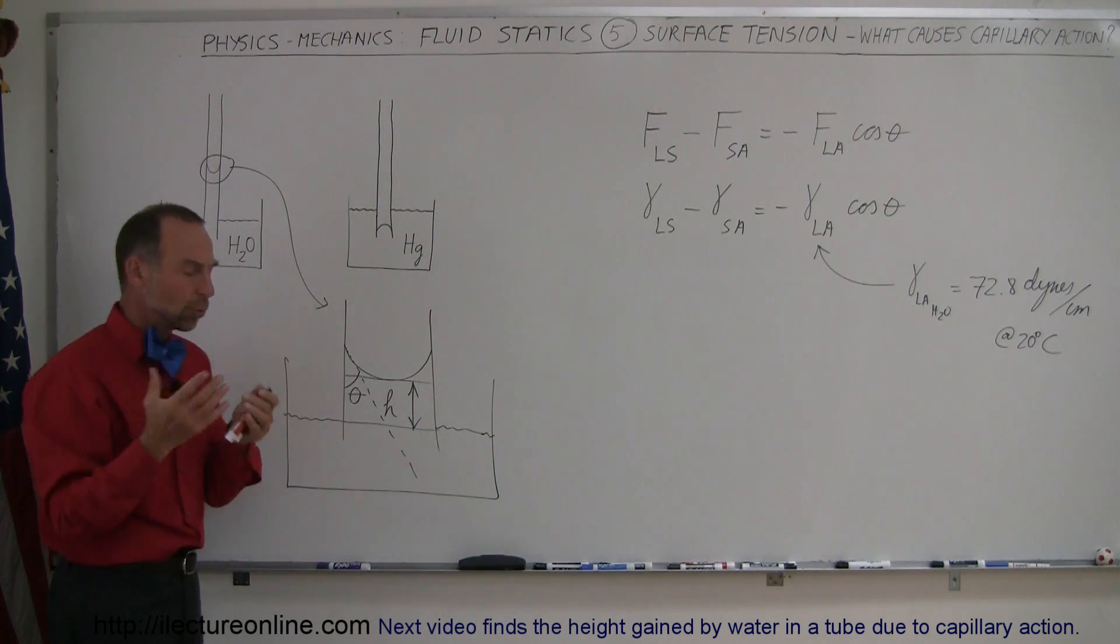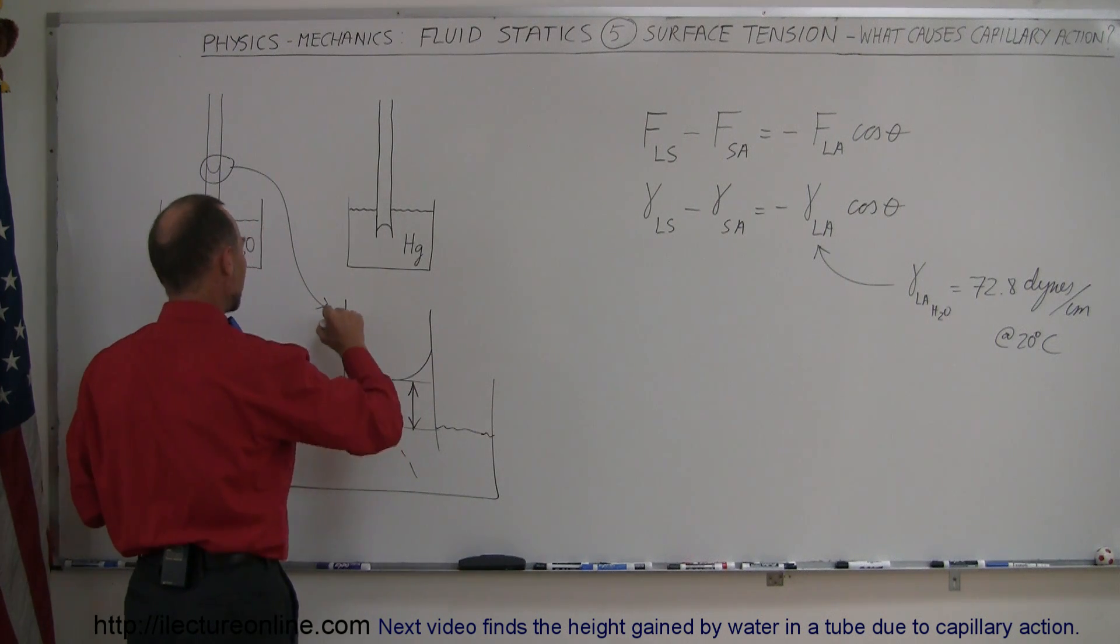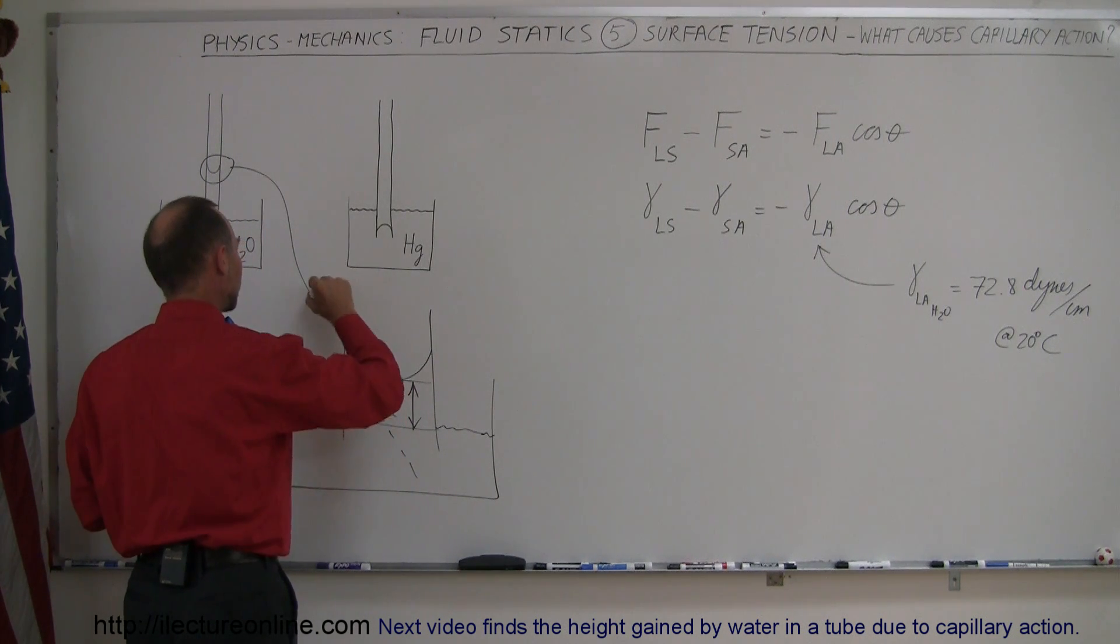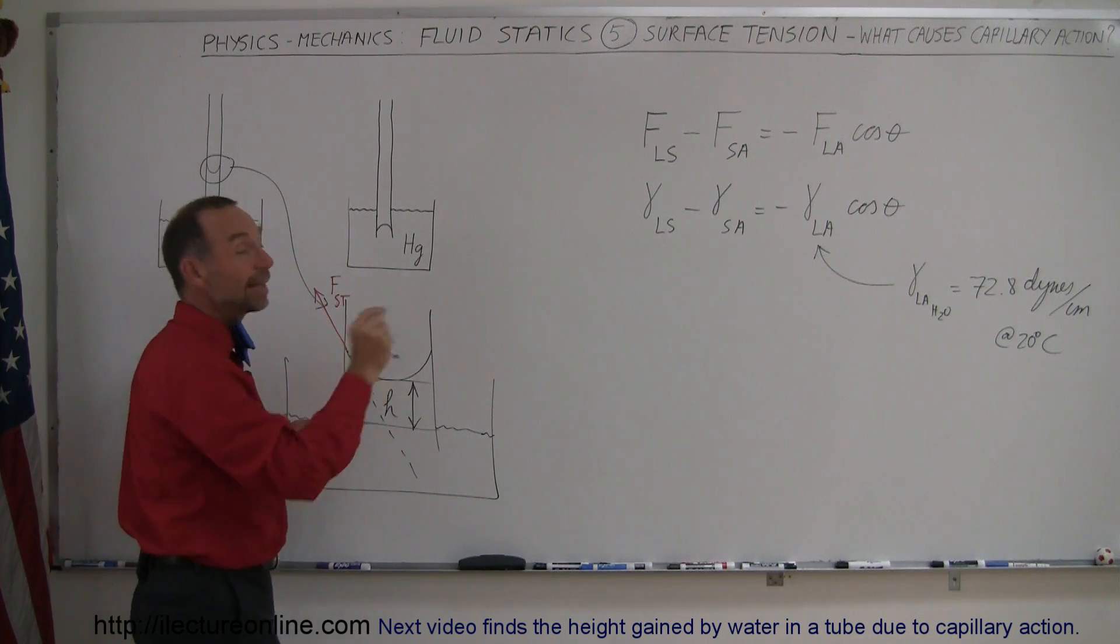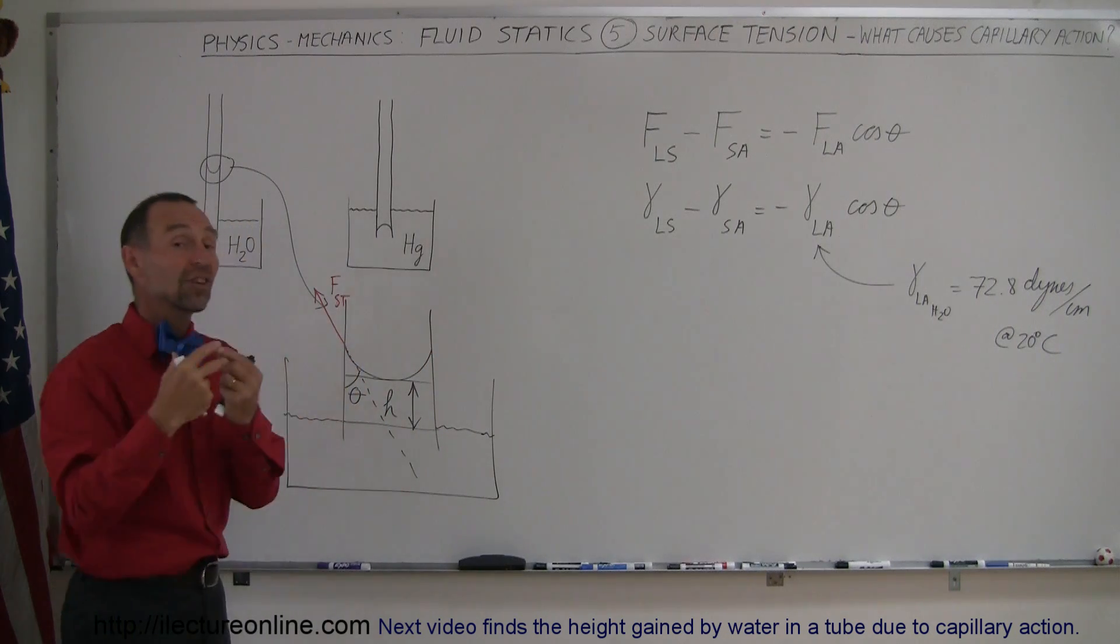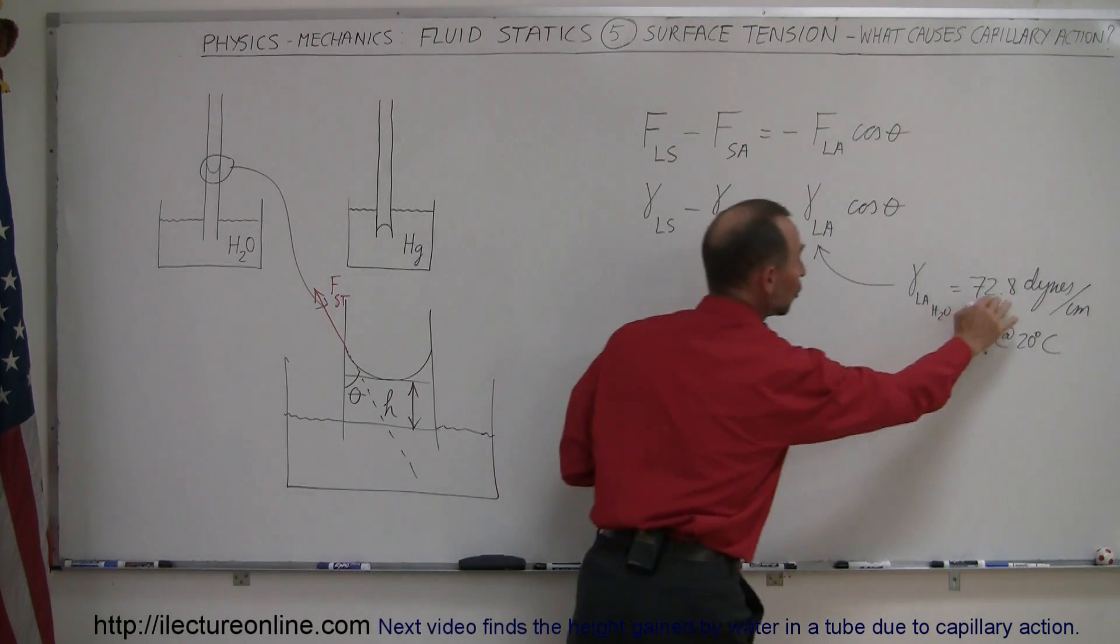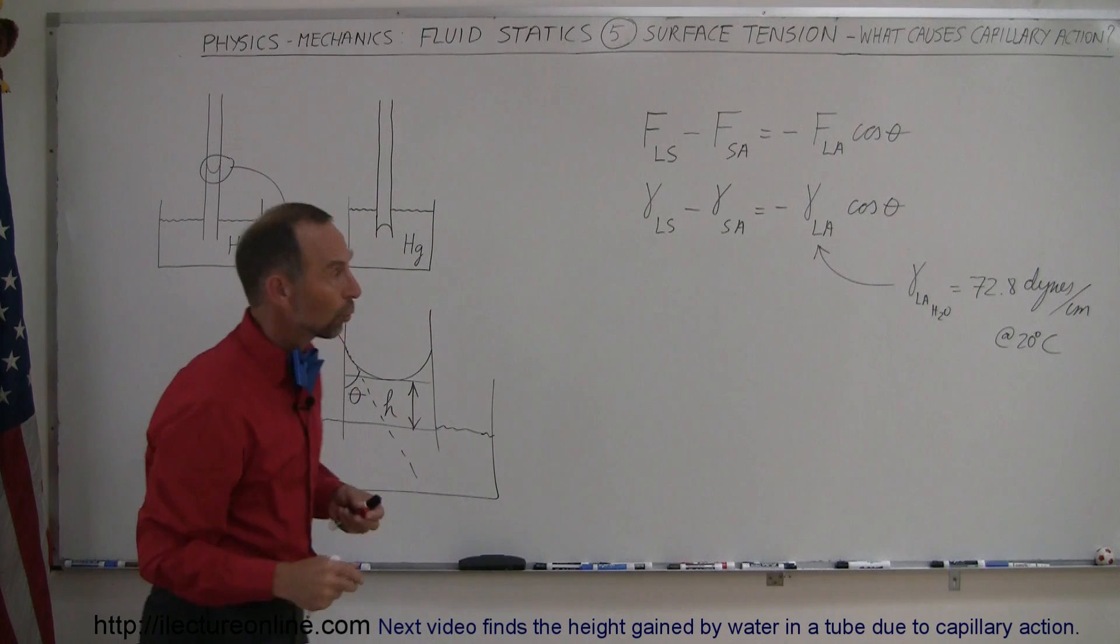We know that there's going to be an upward force in this direction caused by the surface tension, let's just call it ST, between the liquid and the air. So that's the surface tension we're used to, and that is 72.8 millinewtons per meter for water, 20 degrees centigrade.